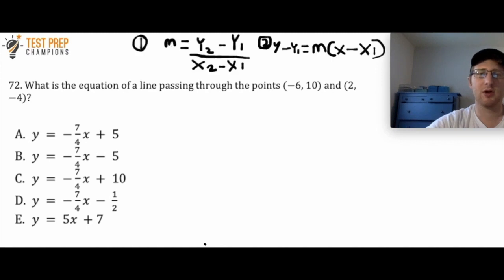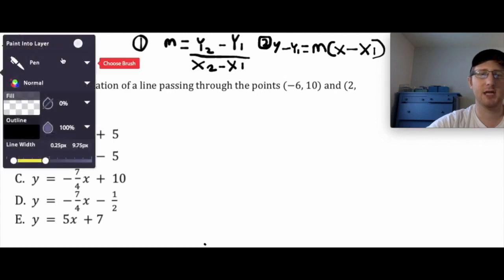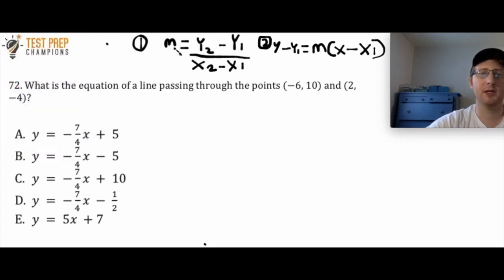Okay, so there are two different formulas that you have to use to get this question right. The first is our slope formula. Slope is equal to y2 minus y1 divided by x2 minus x1. So that's our starting point for this equation of a line question.